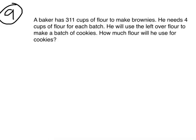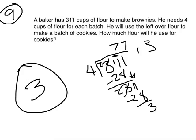Let's do one last question. A baker has 311 cups of flour to make brownies. He needs 4 cups of flour for each batch. He will use the leftover flour to make a batch of cookies. How much flour will he use for the cookies? The baker will have 3 cups of flour left over, so the answer is 3.